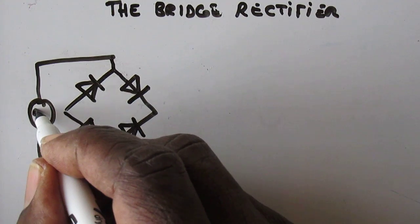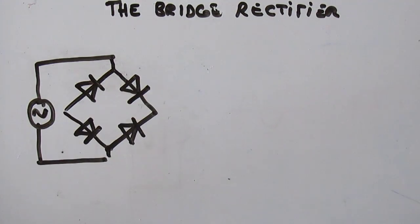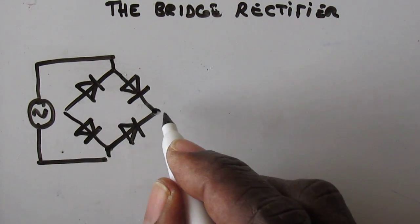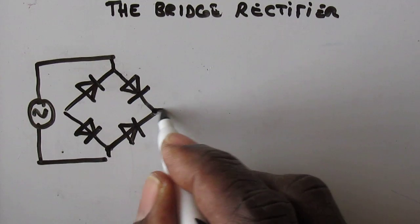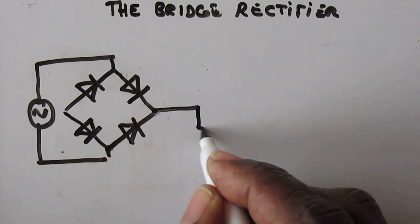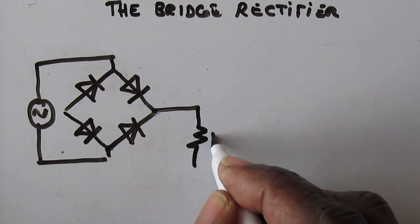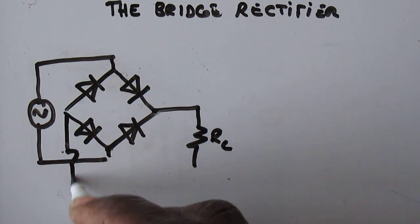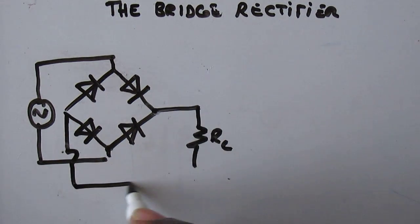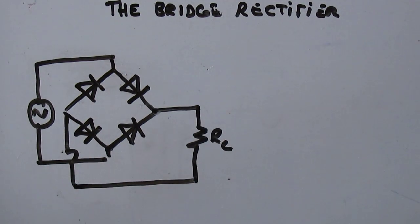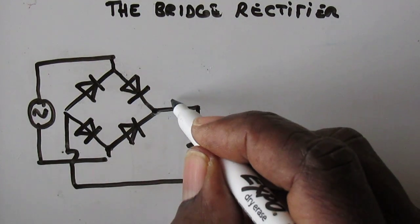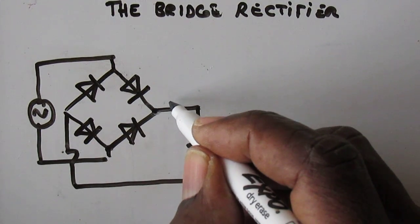Then you draw in the supply at these two points. Let's say it's an AC supply going in, and from this point you draw in the load. We're going to see by the end of the lesson that this point here will always be positive.